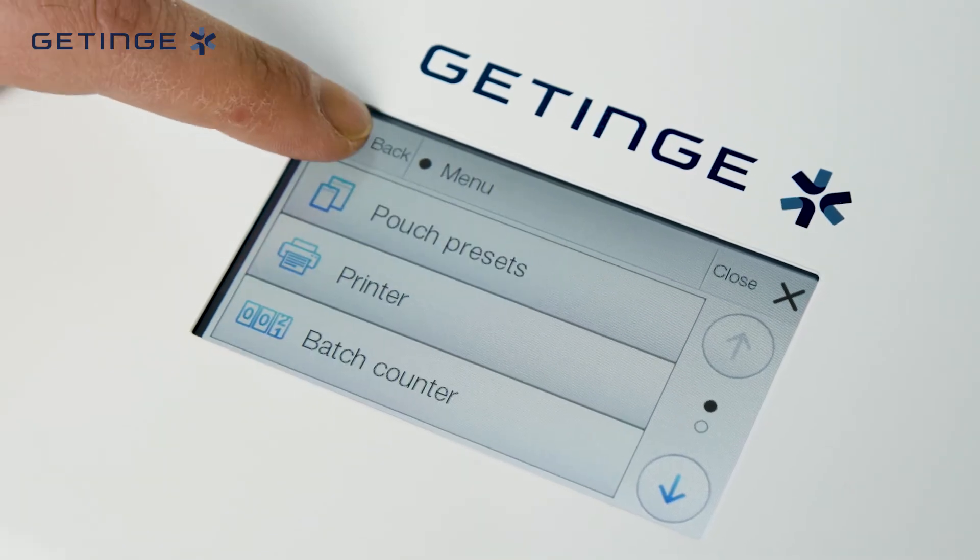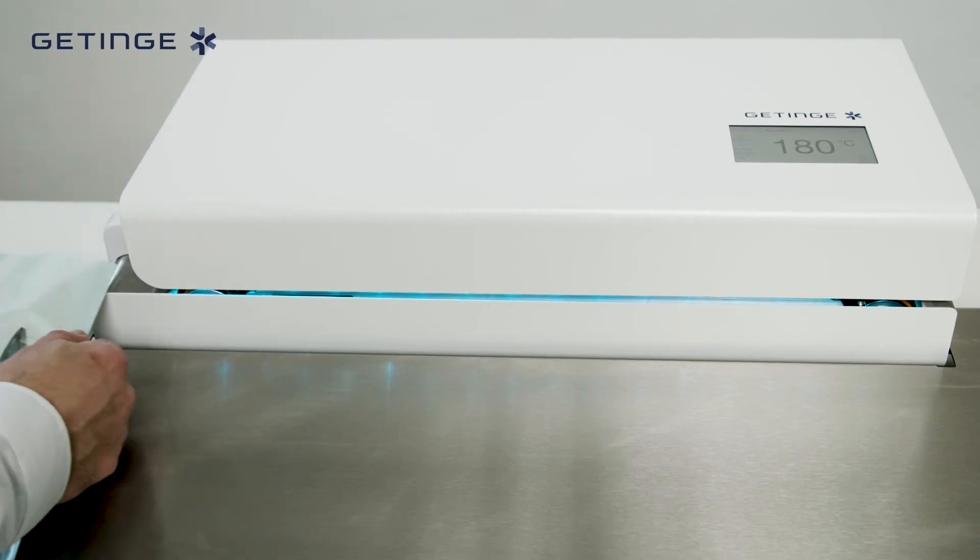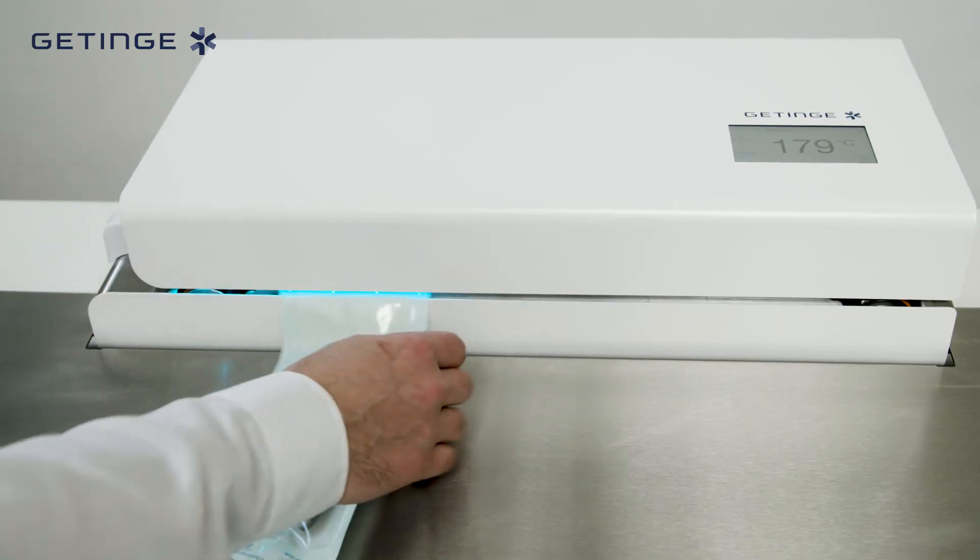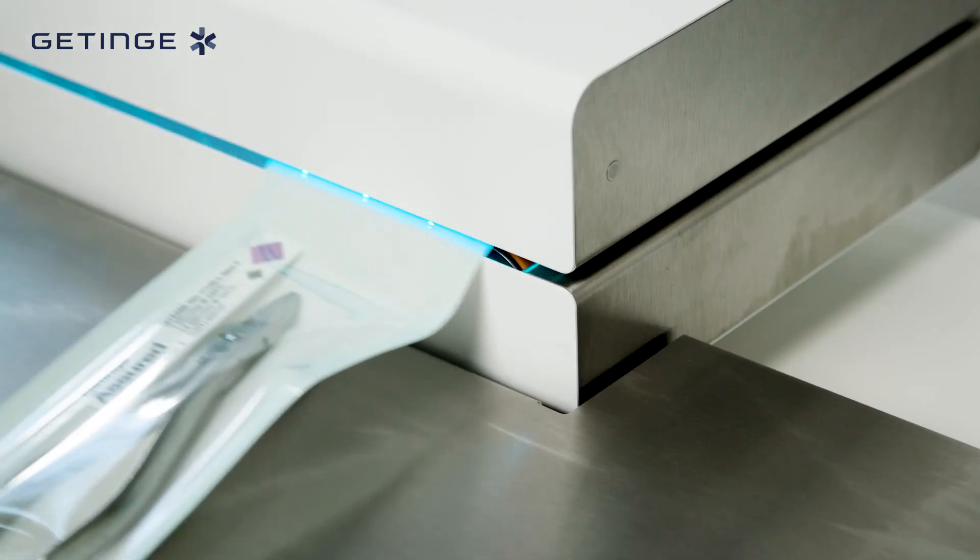The integrated printer on the ProSeal Premium model can print critical sealing parameters and user-defined information directly on the pouch for traceability.